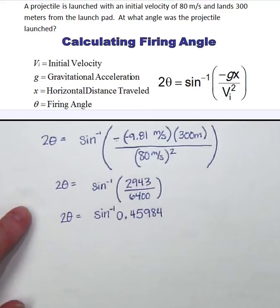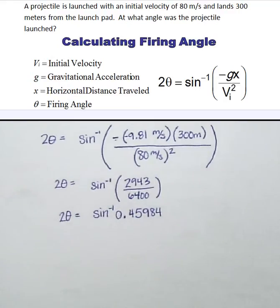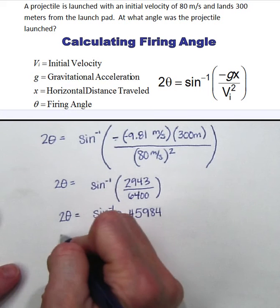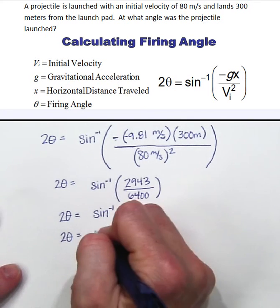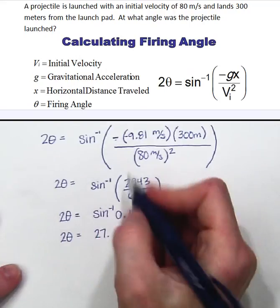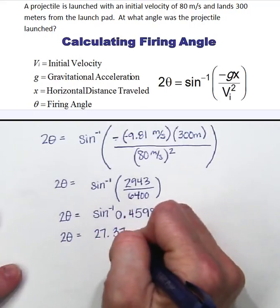So next I go to my calculator and if you will notice right above the sine button on your calculator there is a little writing that says sine negative 1 so that is what I want to use. And I am going to do sine inverse of this decimal that I just found and I get 27.377.